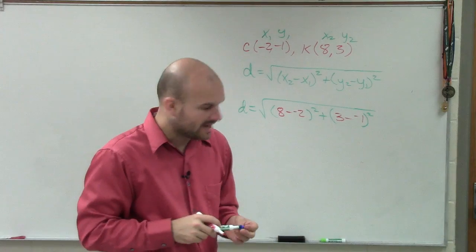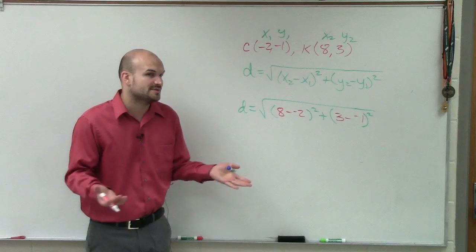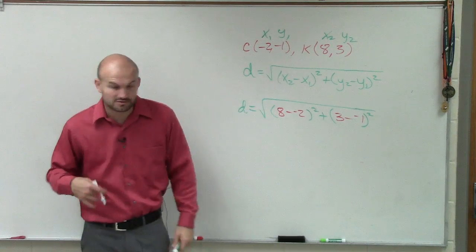So then what I'll go ahead and do is now let's go and simplify this. So 8 minus a negative 2 is going to be 10. 10 squared is going to be 100.